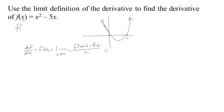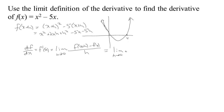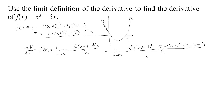Our function works like this: whatever number you give it, it squares it and subtracts five times it. So if I give it x plus h, it would take that x plus h and square it, then subtract five times the x plus h. If I multiply this out, we have x squared plus 2xh plus h squared minus 5x minus 5h. So in this limit definition, f of x plus h is x squared plus 2xh plus h squared minus 5x minus 5h. And then we have to subtract f of x, which is x squared minus 5x, then divide by h.